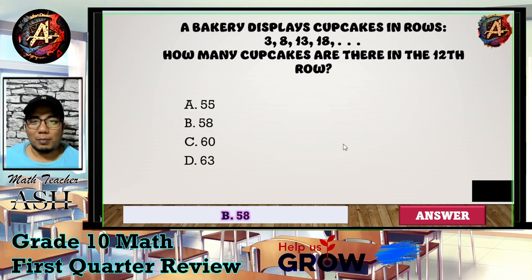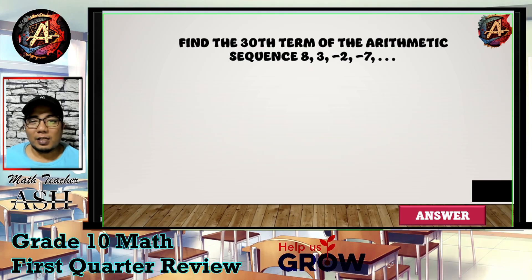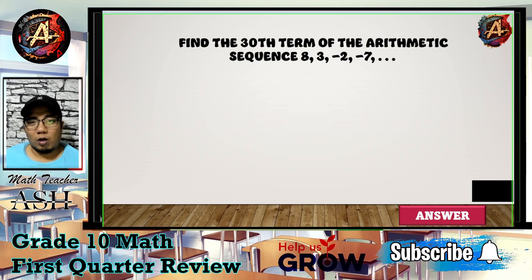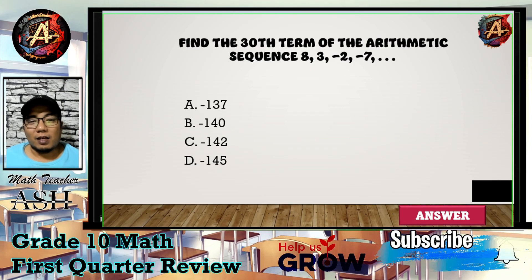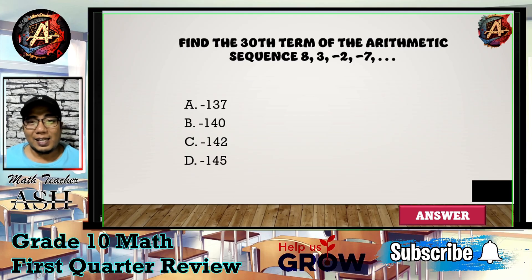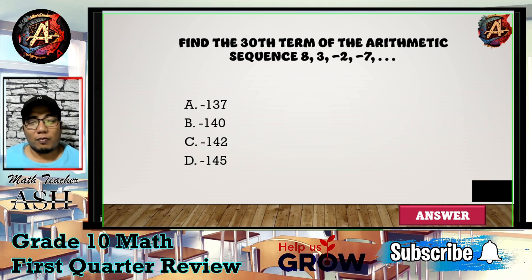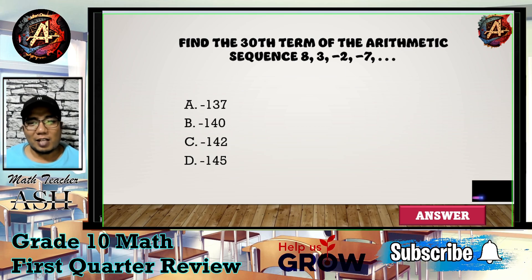Question number nine: Find the 30th term of the arithmetic sequence 8, 3, -2, -7, and so on. Is it A) -137, B) -140, C) -142, or D) -145? I'll give you five seconds to think about your answer.